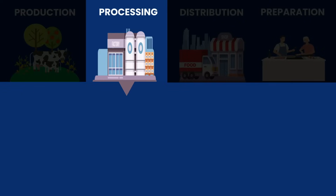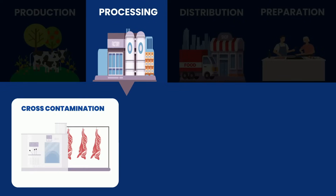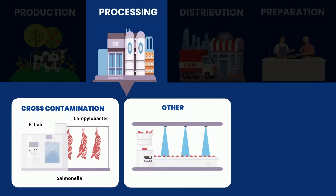In the processing step, contamination can happen during the slaughtering process if pathogens from the animal's gastrointestinal system contaminate the meat product. During processing, pathogens, chemicals, or even physical contaminants such as glass could enter food — for example, when contaminated water is used or when surfaces are not cleaned properly.